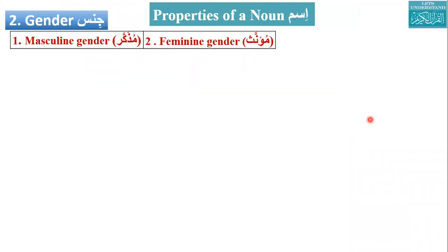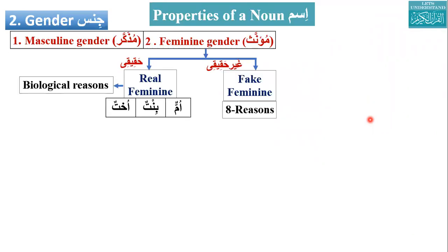We learned number yesterday, so today inshallah we are going to learn gender. Whenever you come across a noun, an ism, you should figure out those four properties. Gender is whether the ism or noun is masculine or feminine. Normally every ism is considered muzakkar, or masculine, unless it follows certain rules.